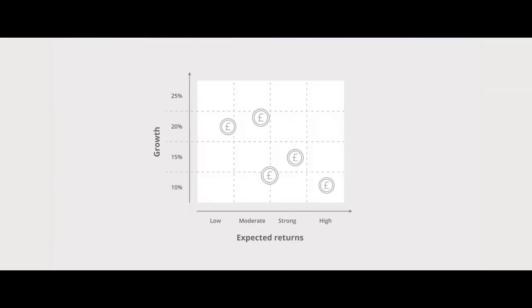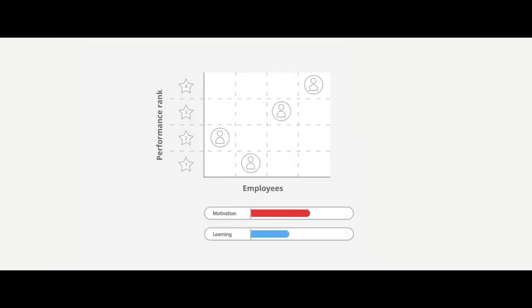Management accounting involves the measures that executives are looking over when they're making decisions. It involves the way that those measures translate into results, and of course that occurs through target setting.